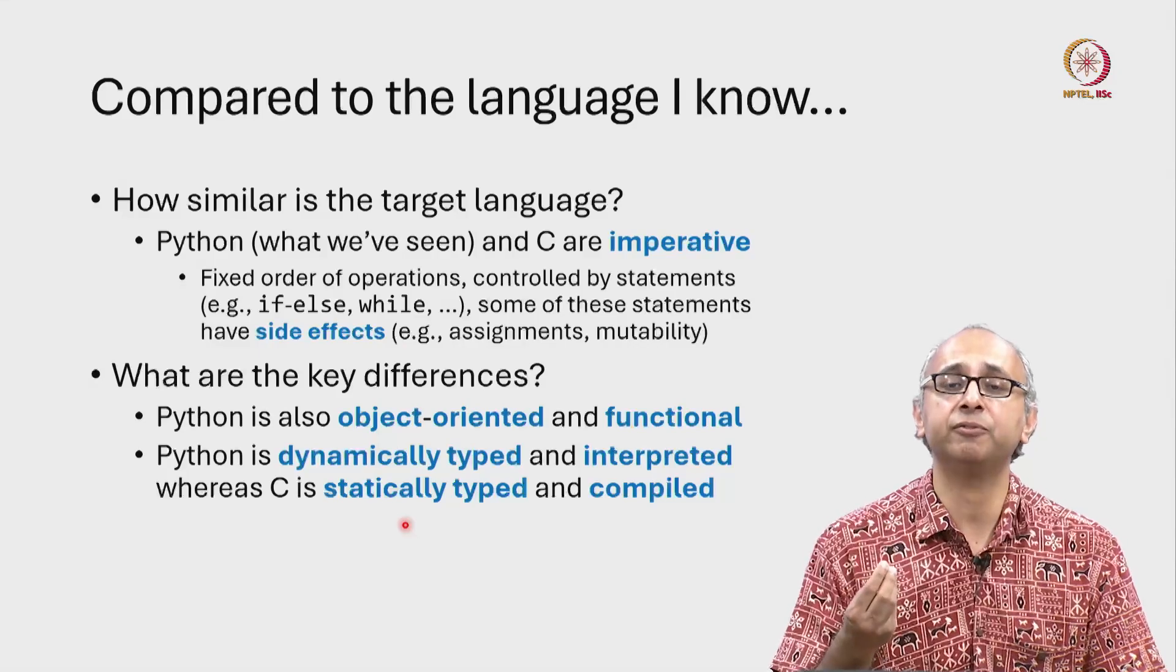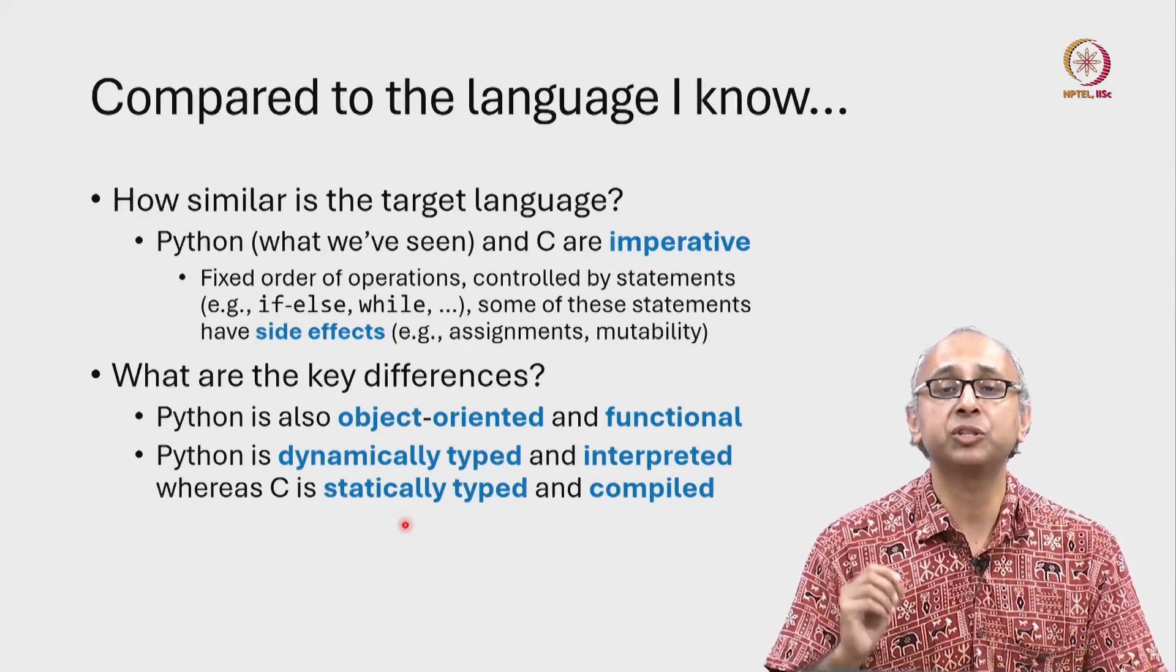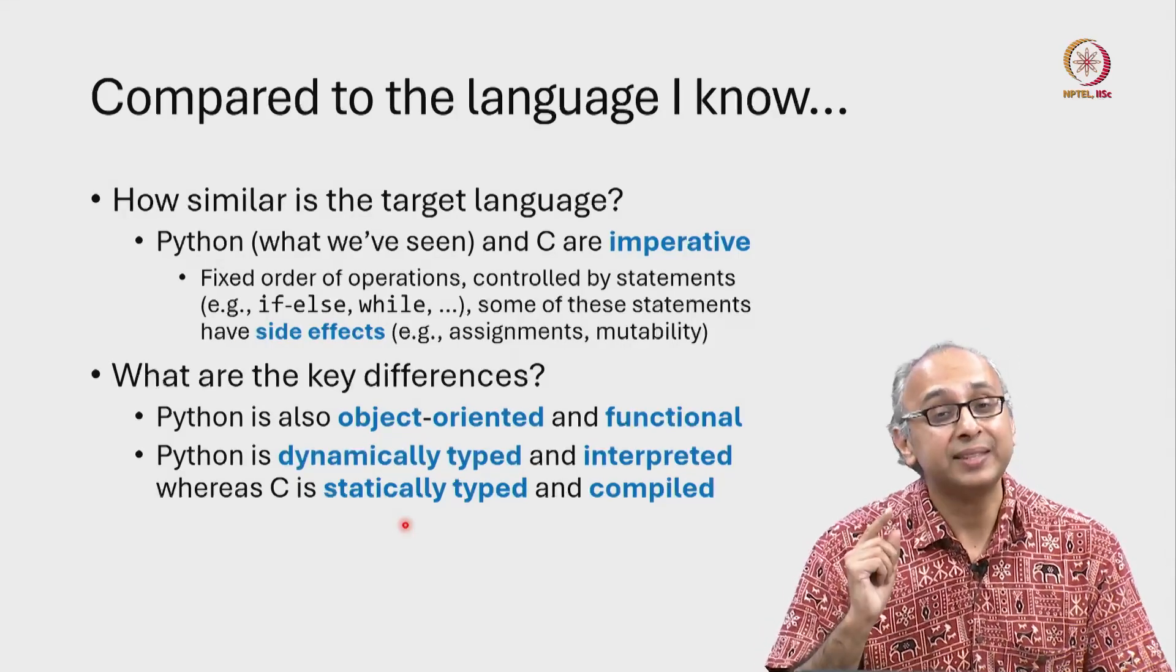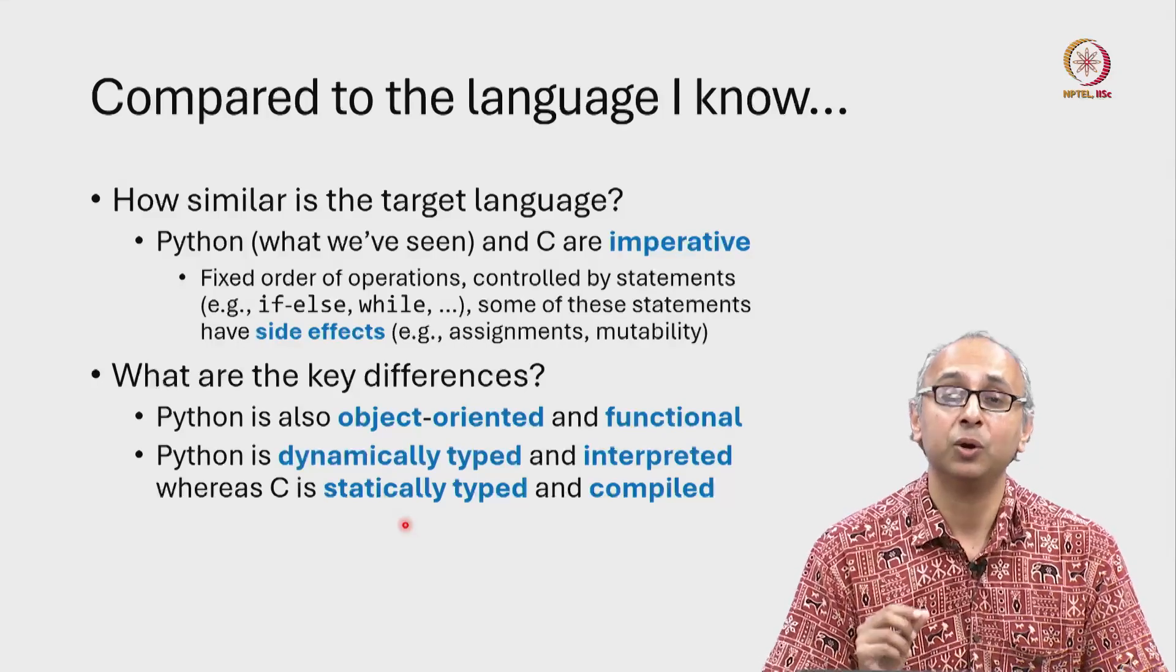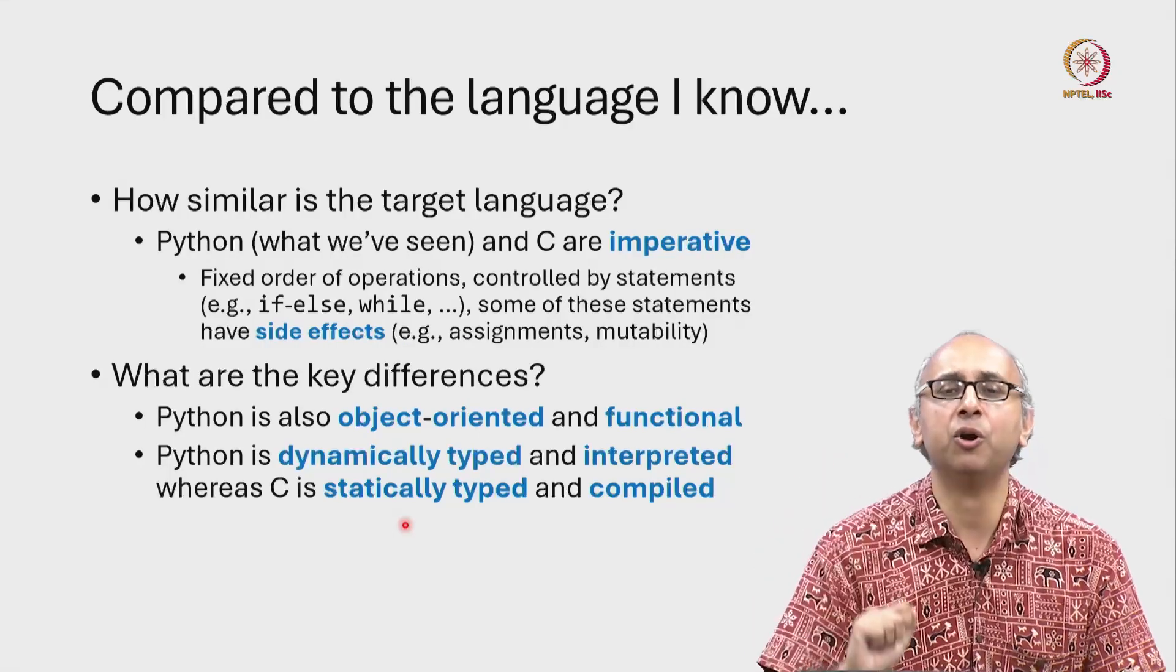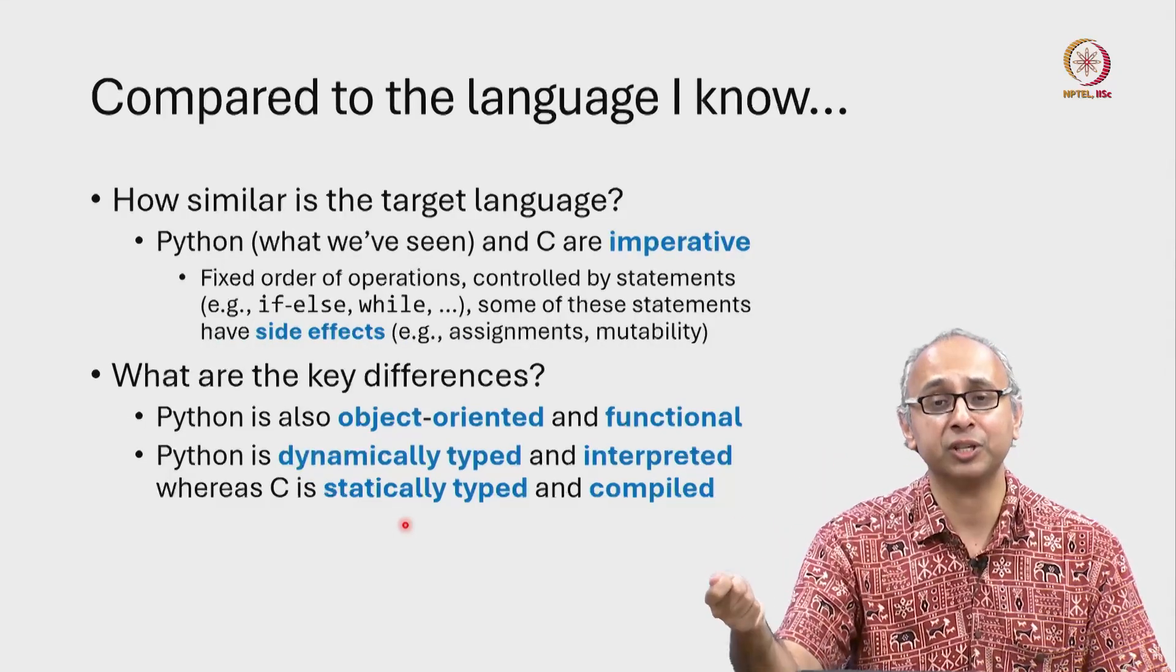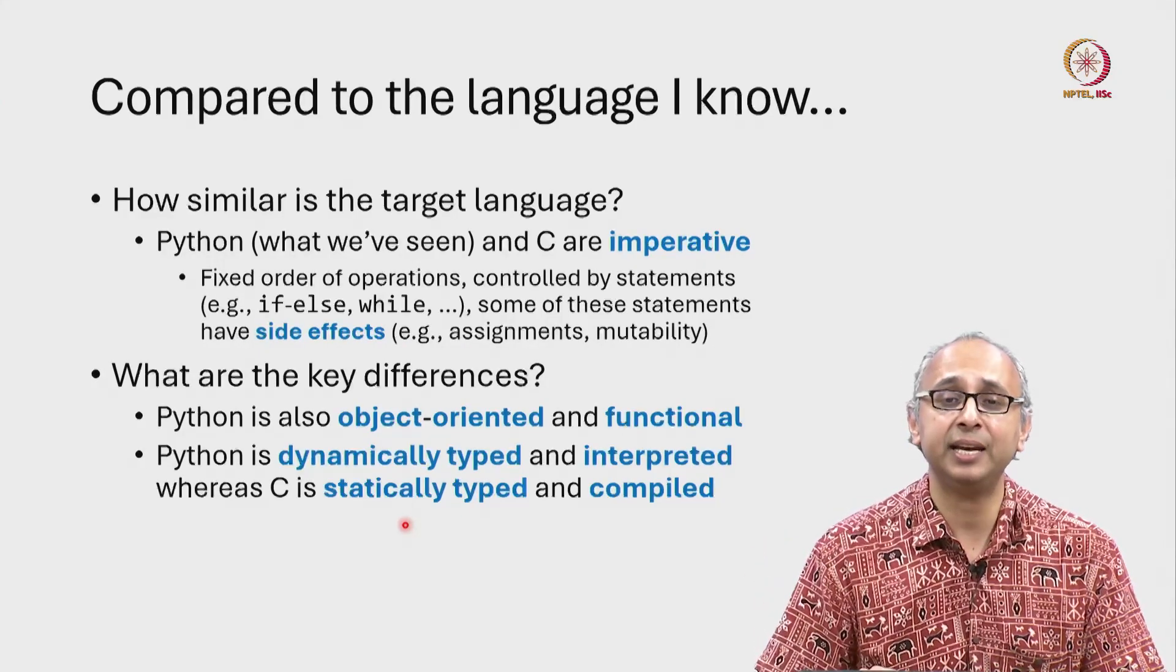So for example, we have seen that when we have a Python variable X, at a certain point in the code, that X could be of type int. Later in the code, that same variable X could be of type string. Why is that? Because we have seen that a Python variable is really like a label and we can attach it to an object of type int at one point in the code and reattach it to a different object, maybe of type string, at a later point in the code.